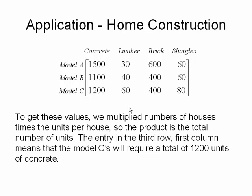We need to remember what we did. We multiplied the number of houses times the units per house. So the product is the total number of units corresponding to these entries.